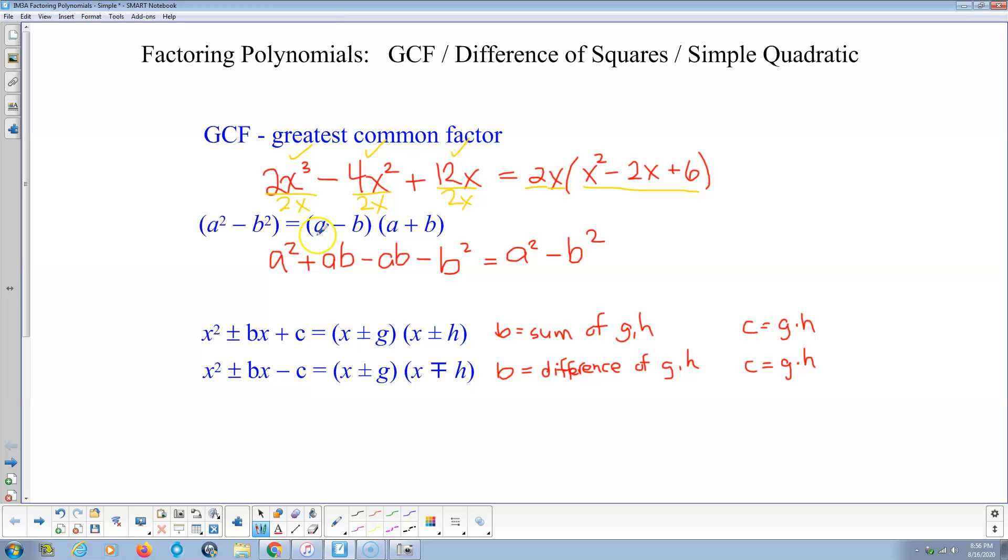Difference of squares. Notice most of the time we multiply two binomials, we get a quadratic with three terms. A constant added to a variable added to that variable squared. These binomials are special - the first term's the same, second term's opposites. We call those a conjugate pair. They make another binomial.